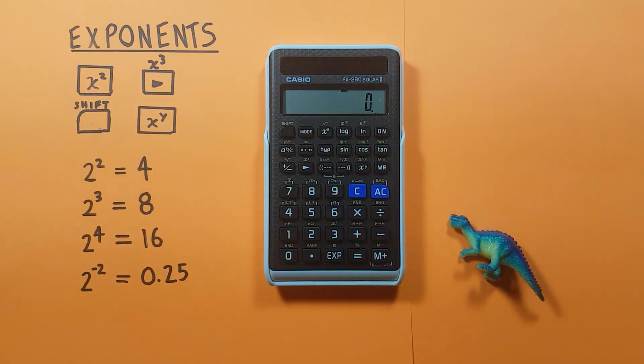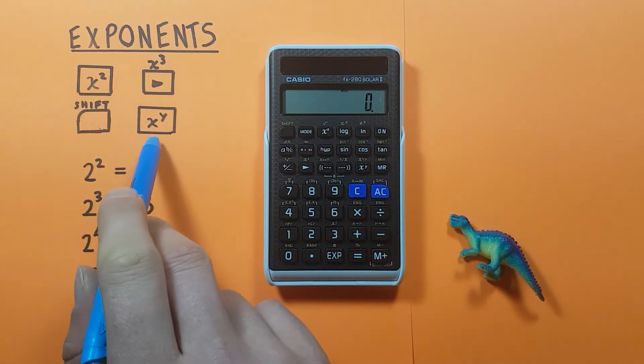Okay, these are all good, but what if we want to find an exponent that isn't a square or a cube? Well, that's where the x to the y comes into play.